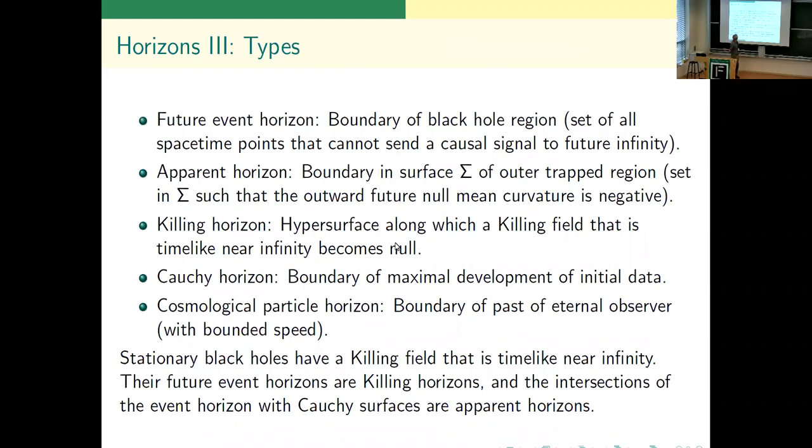Now we've had a few different types of horizons. I'll enumerate most of them here. We've had the definition of future event horizon - the boundary of the black hole region. It's a spacetime concept. You have to know the whole of spacetime to ask what is the past of future null infinity.